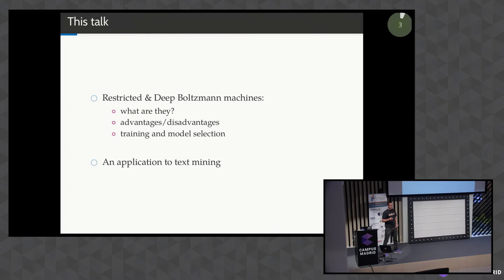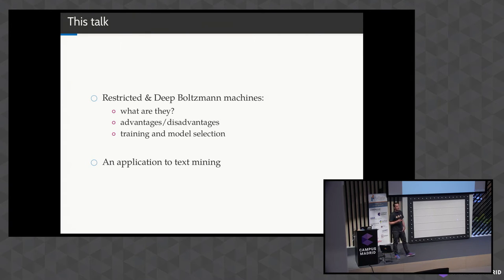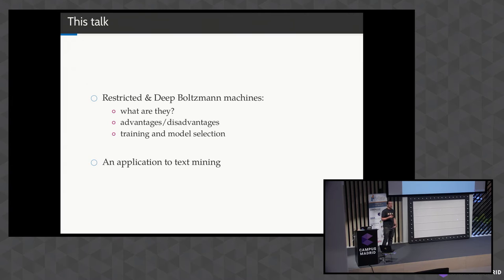Today I want to talk about deep and restricted Boltzmann machines, and I want to give an introduction to what they are, what their advantages and disadvantages are, how you would train these models, and how you would do model selection. And I want to try and motivate all of this by an application to text mining.